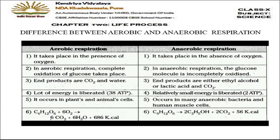Comparing aerobic and anaerobic respiration: aerobic occurs in the presence of oxygen; anaerobic in the absence of oxygen. Aerobic respiration involves complete oxidation of glucose; anaerobic involves incomplete oxidation. Products of aerobic respiration are CO₂ and water; products of anaerobic are lactic acid and ethanol. A lot of energy is released in aerobic respiration — 38 ATP molecules — whereas in anaerobic very little energy is released, only 2 ATP molecules. Aerobic occurs in plants and animals; anaerobic occurs in bacteria and human muscle cells.